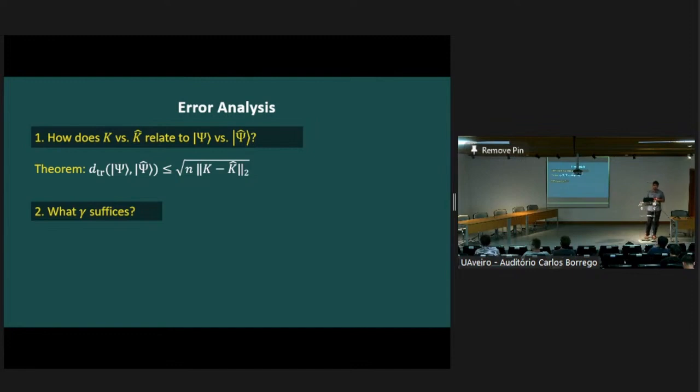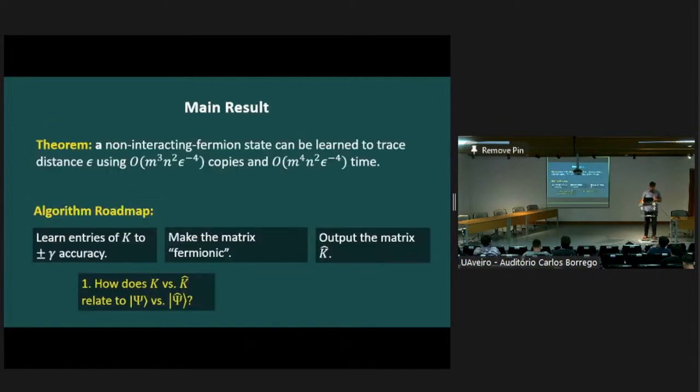Are there other questions? Hi. Thanks for a great talk. You mentioned that you learned the matrix K. You later have to fermionize it by making sure that it's a projector of rank K. How costly is that kind of post-processing? It's not too costly. Essentially, the cost is dominated by diagonalizing the matrix. We have m by m matrices here. So that's m cubed time. Or it might even be matrix multiplication time. I'm not sure. But yeah, m cubed.